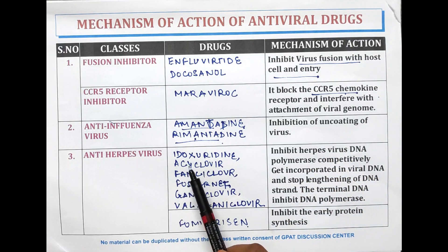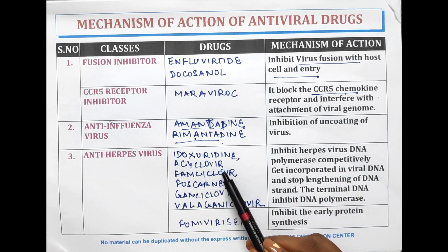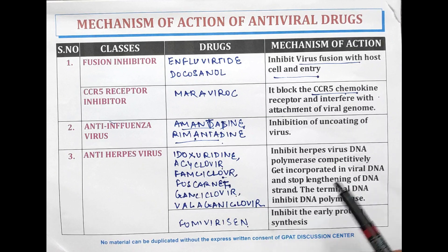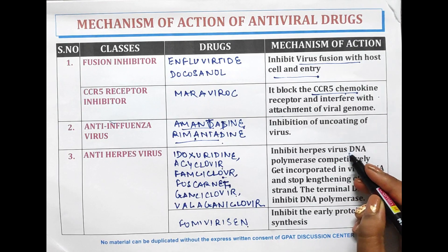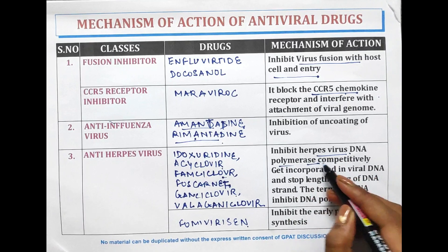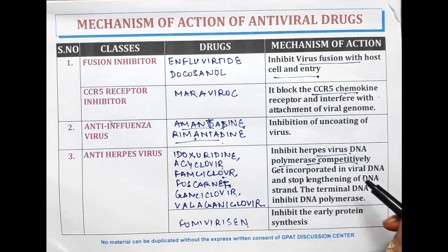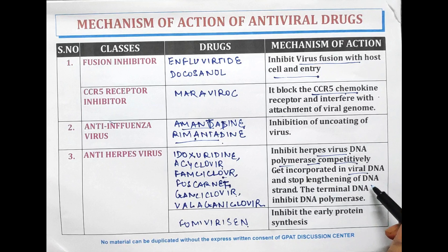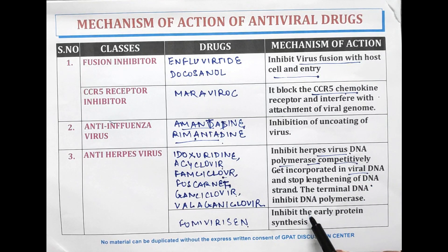Anti-herpes virus drugs — idoxuridine, acyclovir, famciclovir, foscarnet, ganciclovir, and valganciclovir — inhibit herpes virus DNA polymerase competitively. The drug gets incorporated into the viral DNA and stops the lengthening of the DNA strand. The terminal DNA inhibits the DNA polymerase.